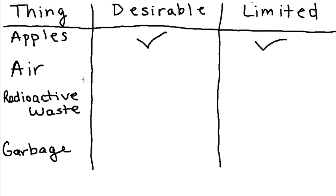Now, let's think about air. Is air desirable? Well, we need air to breathe, don't we? So, air is definitely desirable. But, is air limited? No, you can have as much air as you want. So, air is not scarce.